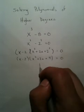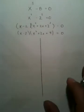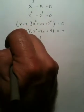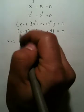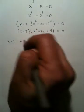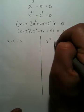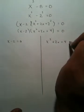Now, from there, you're going to break your answer into two parts. One of those is going to be x minus 2 equals 0, and the other one is going to be x squared plus 2x plus 4 equals 0.